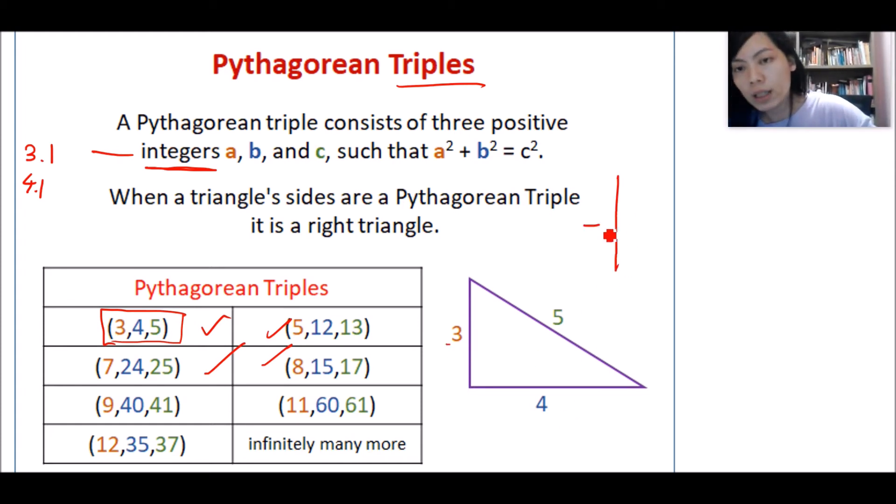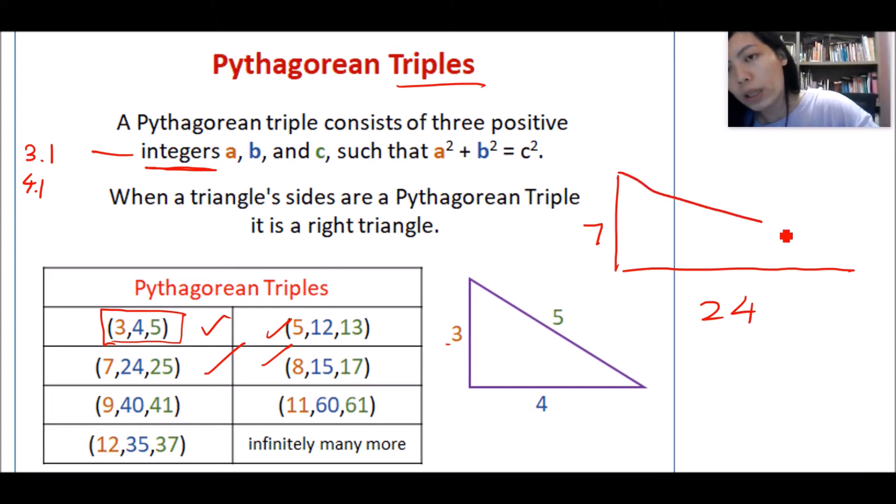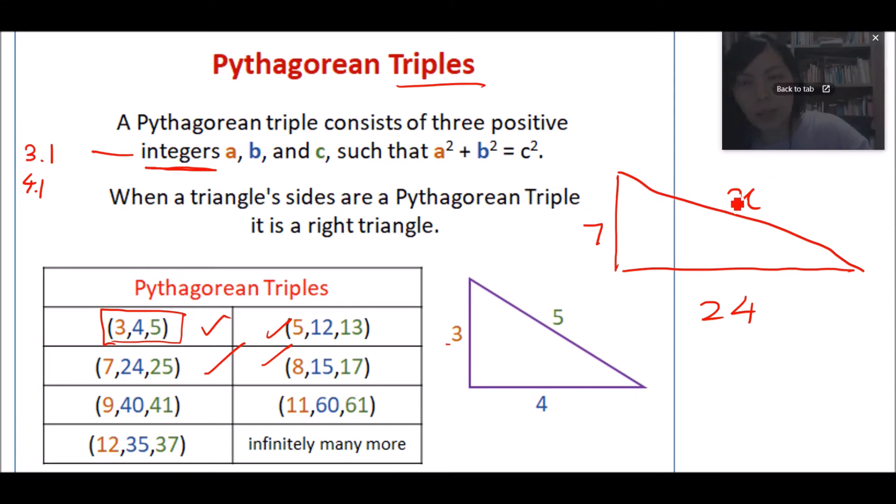So what it means is like this: 3, 4, 5. If this is 7, this is 24, what will be the length of this side, the unknown side here? So without using a calculator, what is the length of this side? Yes, it is 25.